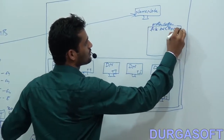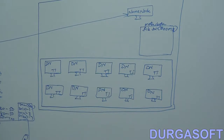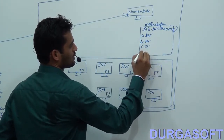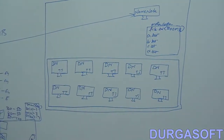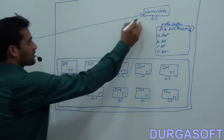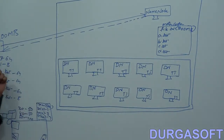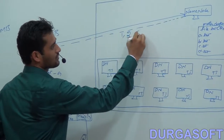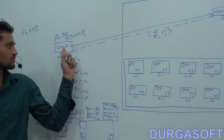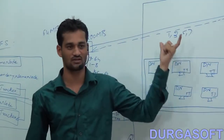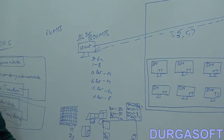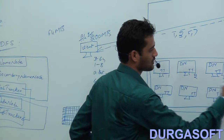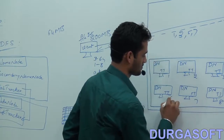Since we are using cheap commodity hardware, data nodes may fail. To overcome data loss, HDFS provides three replications by default — meaning each file block gets two extra backup copies. So if you store 200 MB of data, it actually occupies 600 MB because of three replications. The replication settings are configured in XML files, which are the heart of Hadoop, handled by the administrator.